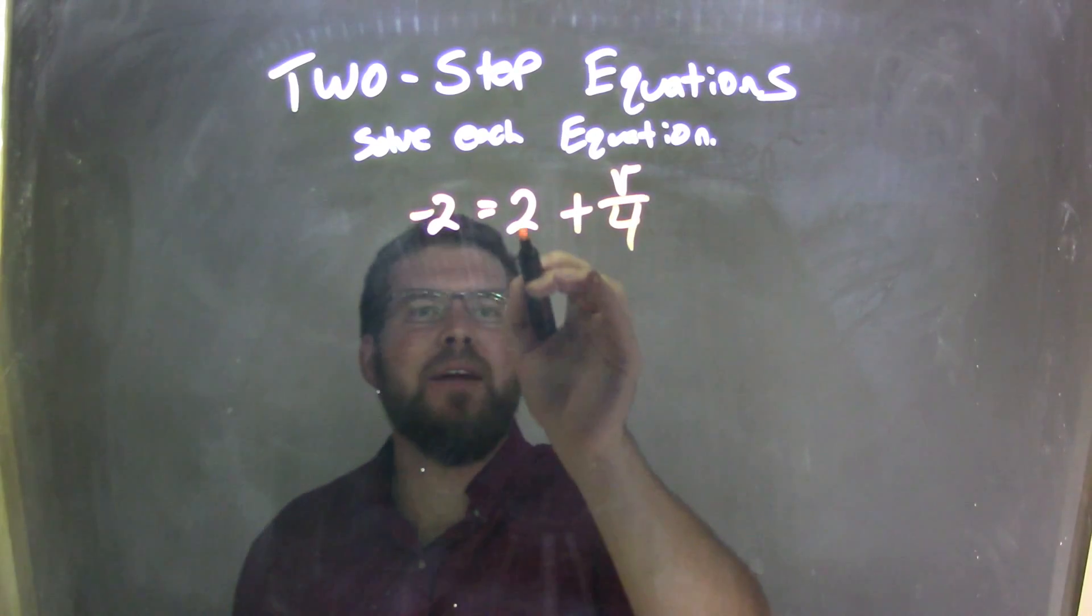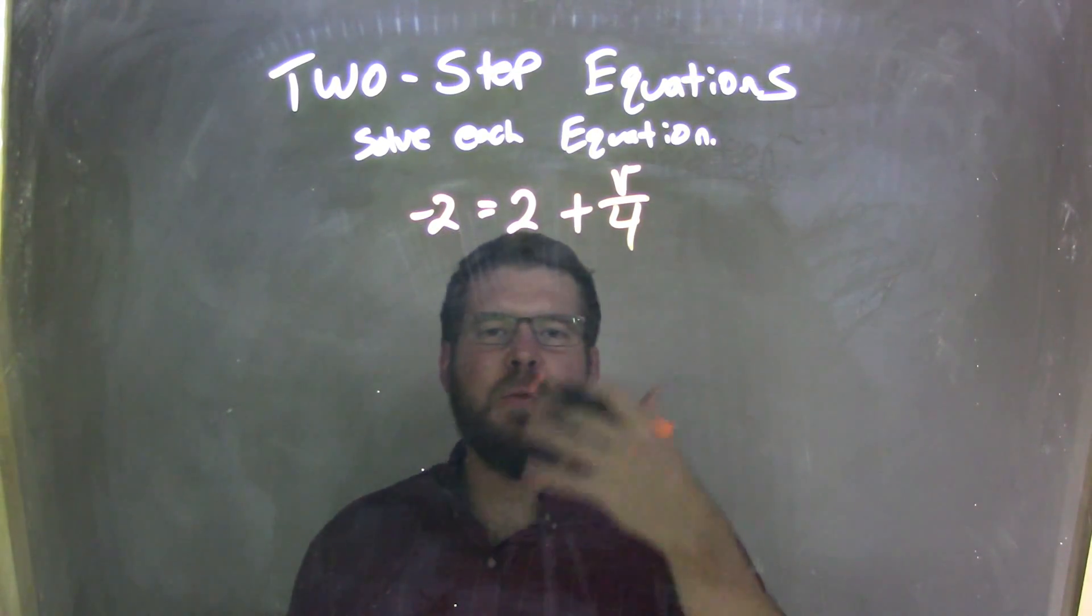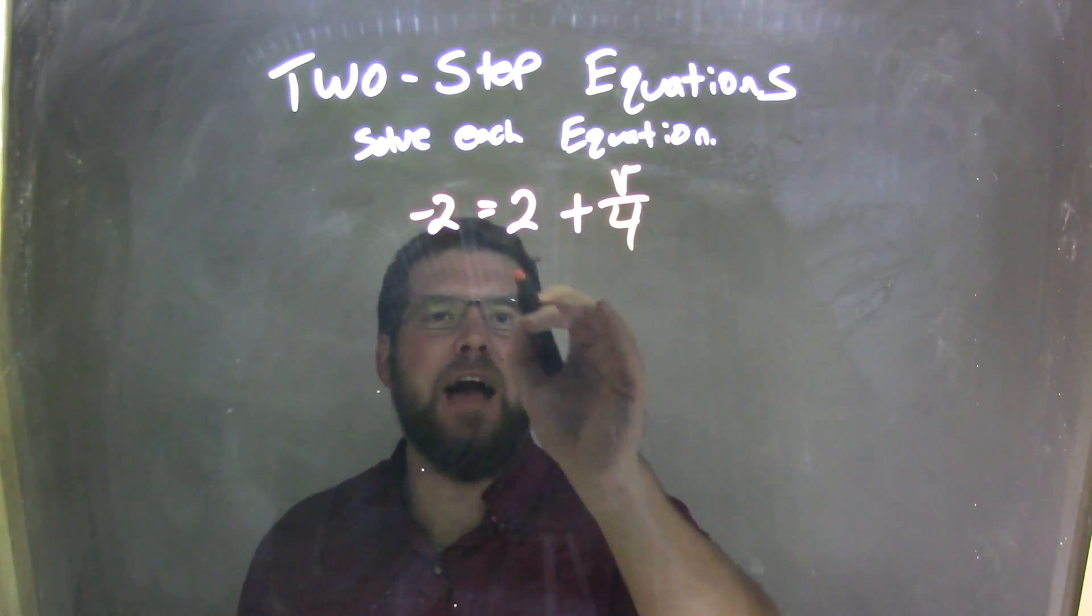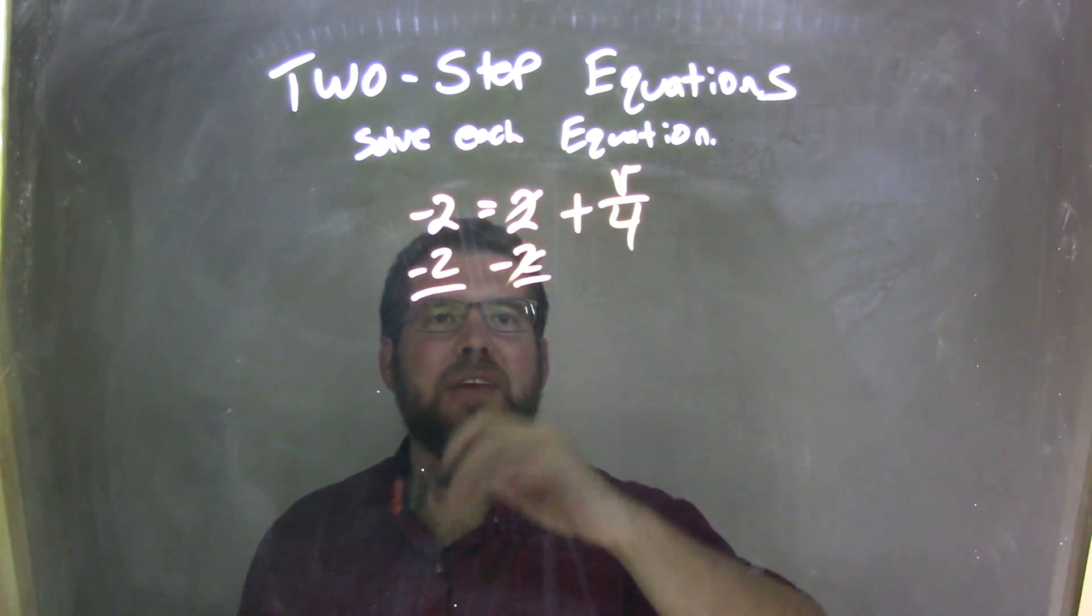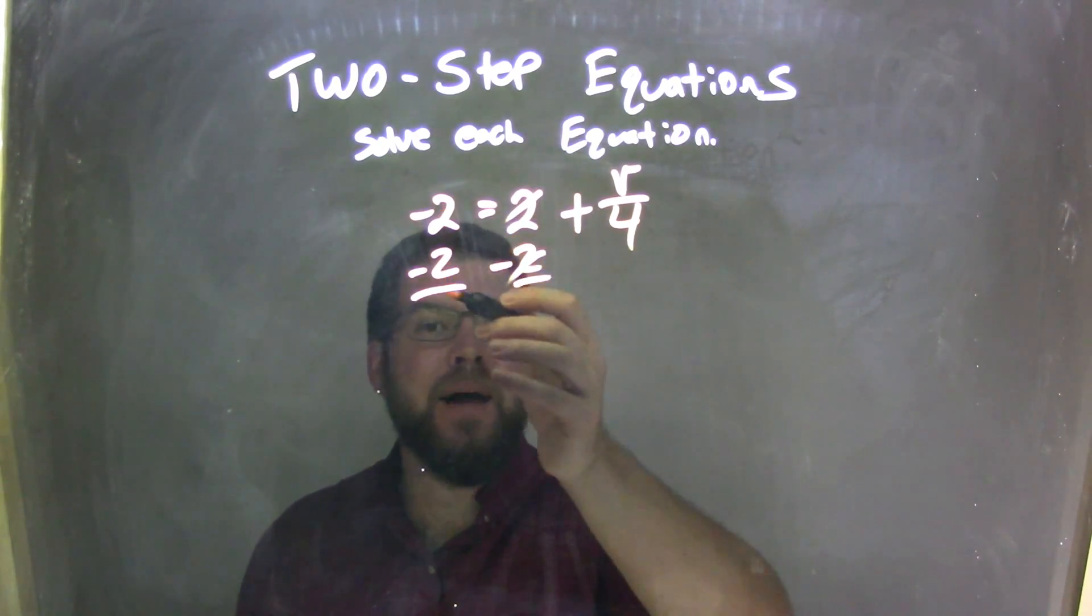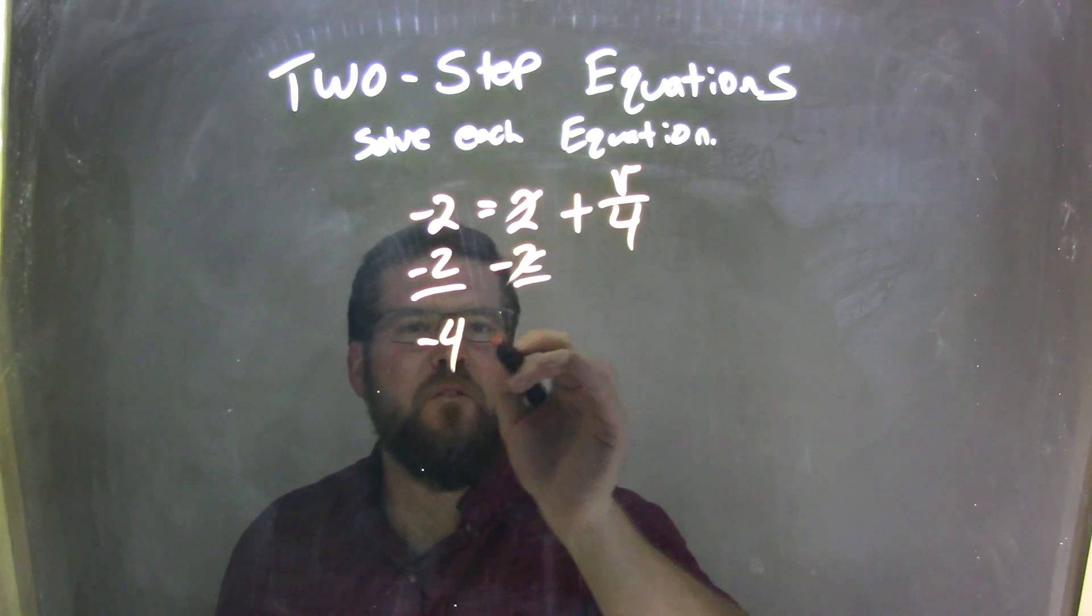Well, my first step here is to bring this 2 to the left. It's a positive 2, we're adding it. Opposite of that is subtraction, so we subtract a 2 to both sides. These 2's cancel and negative 2 minus 2 is a negative 4.